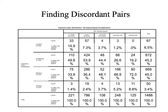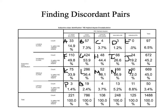With concordant pairs, we started over here in cell A. Let's go ahead and label all of our cells real quick. We are going to label them as A, B, C, D, E, F, G, H, I, J, K, L, M, N, O, P, Q, R, S, and T.